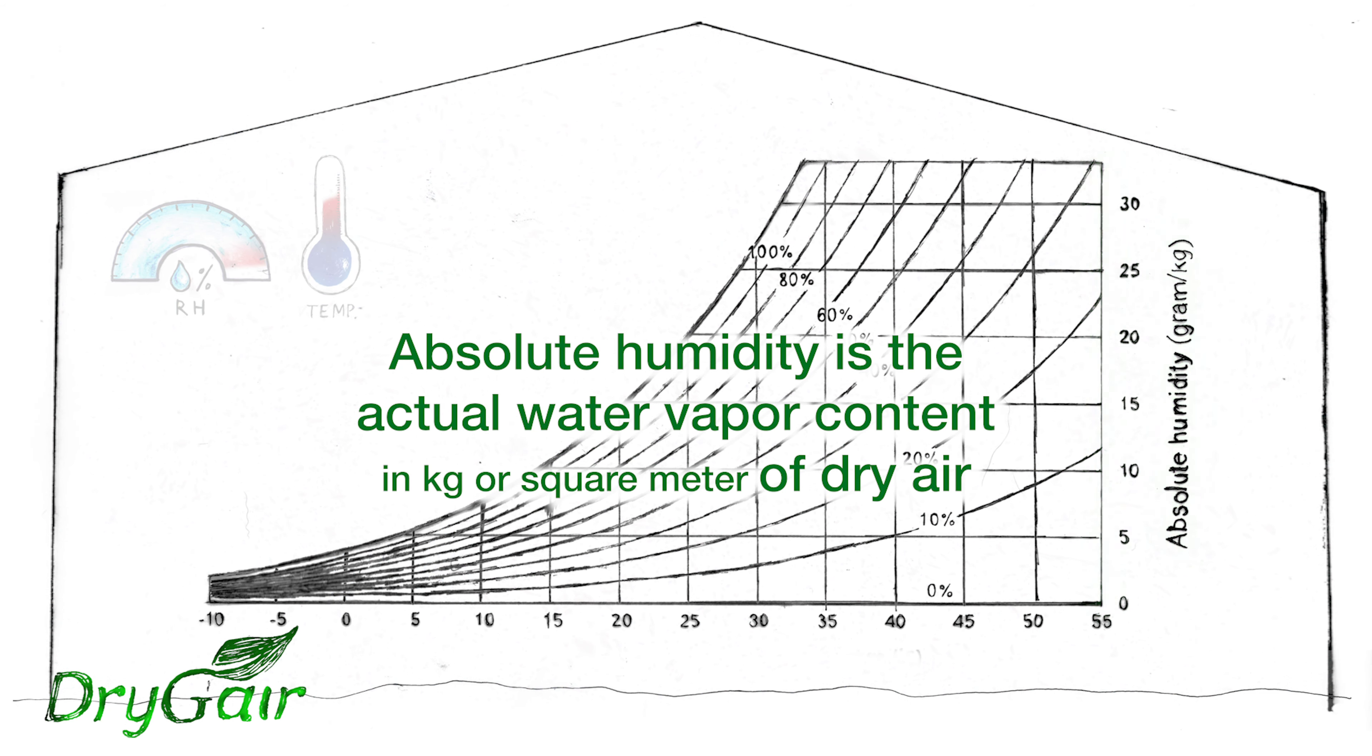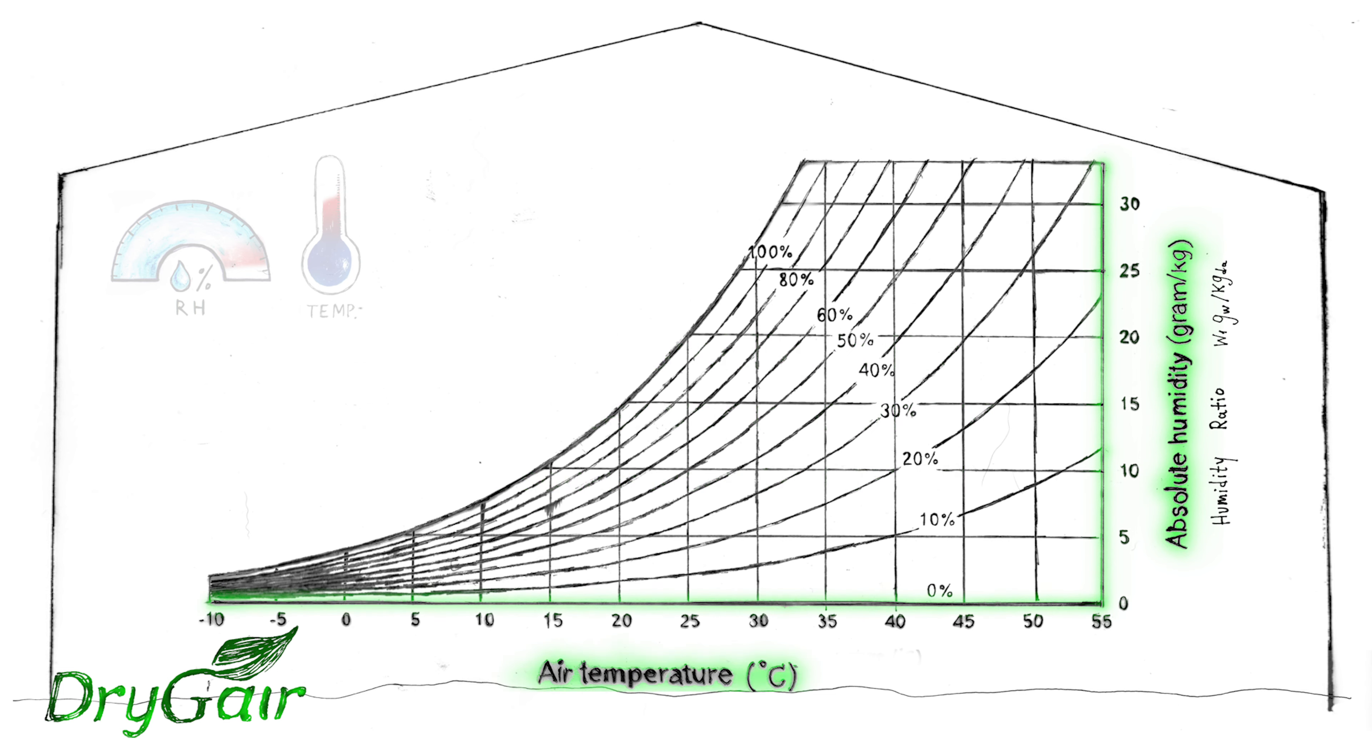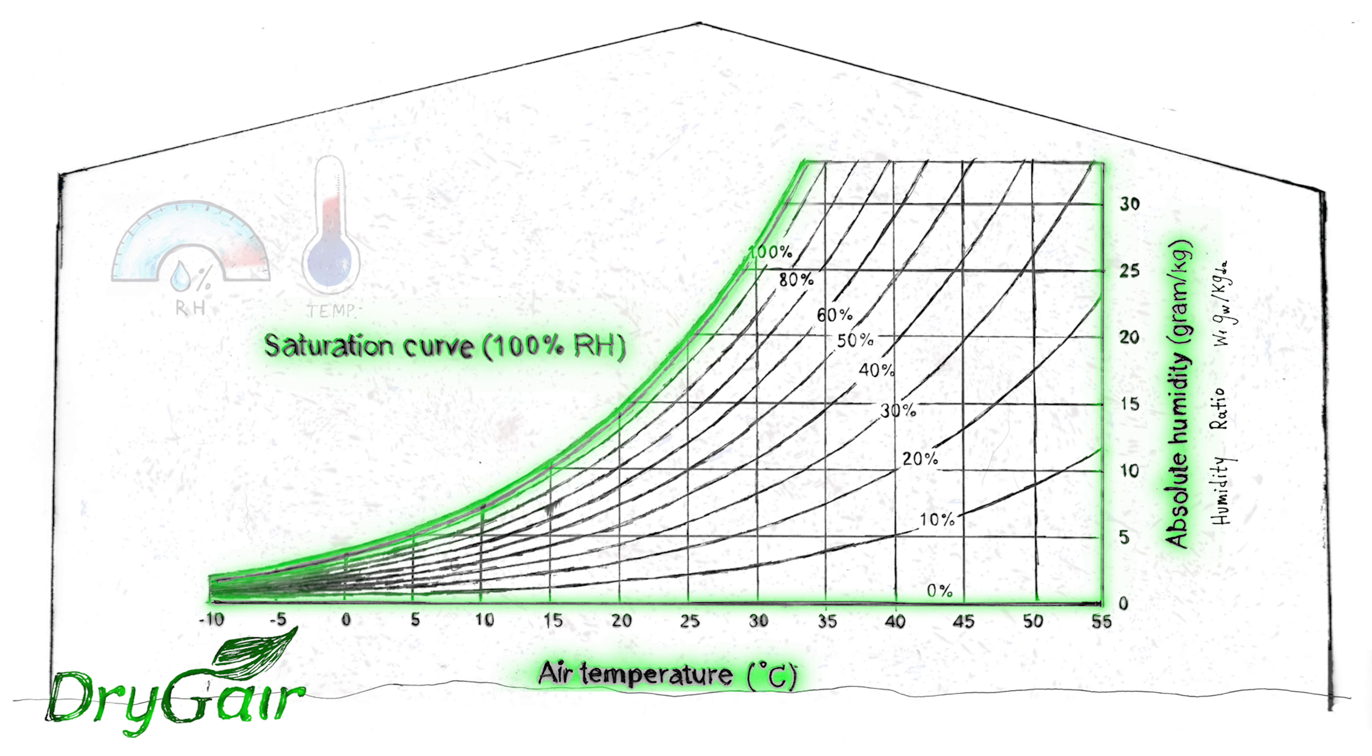Absolute humidity represents the actual water vapor content of dry air. This axis represents air temperature. And this is the saturation curve.